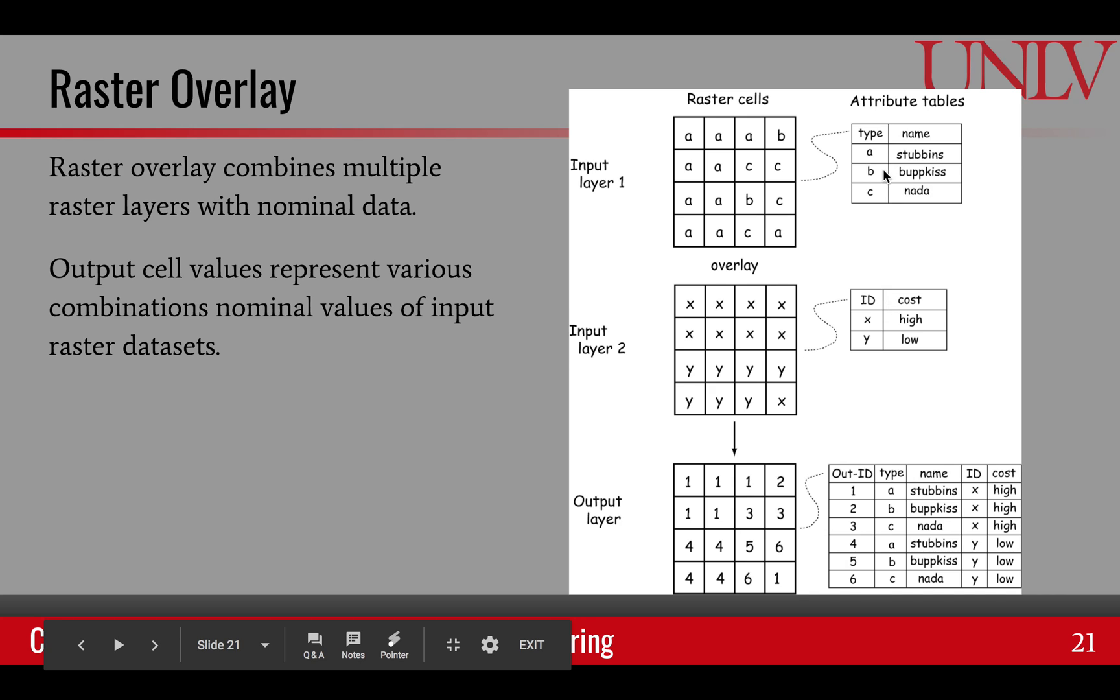Overlaying will create different combinations of those two raster layers. And those combinations will define a new nominal type raster layer. And the attribute tables that correspond to those two raster layers will also be combined where new rows will be created showing all of those combinations. For example, 1 will always appear when A and X are together. 2 will always appear when B and X are together, and so on and so forth.